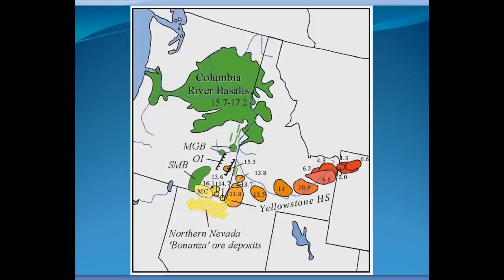The Yellowstone hot spot has stayed stationary while the North American plate has slid over it. The youngest things are where Yellowstone is now in the northwest corner of Wyoming, but it slides backwards. The current activity at Yellowstone is 600,000 to maybe 2 million years old. Moving back into Idaho you get material that's 4 to 6 million years old, then 10, 11, 12.5, 13 million, and some that are up to 15 and 16 million years old.